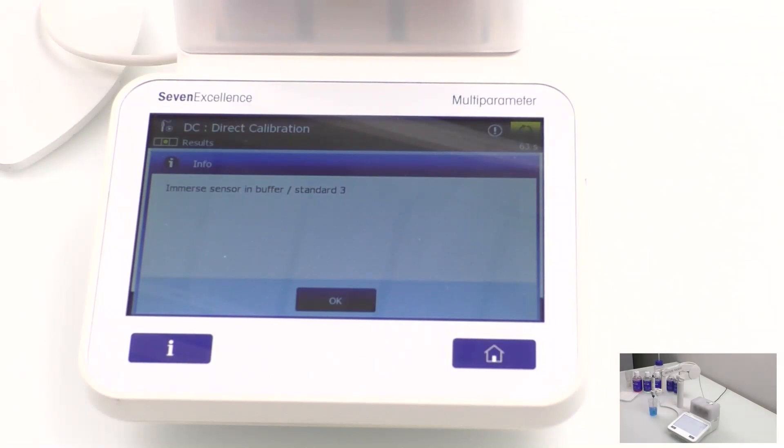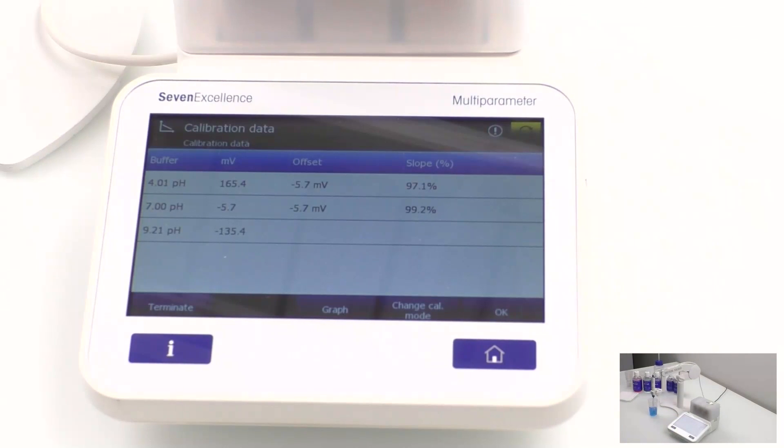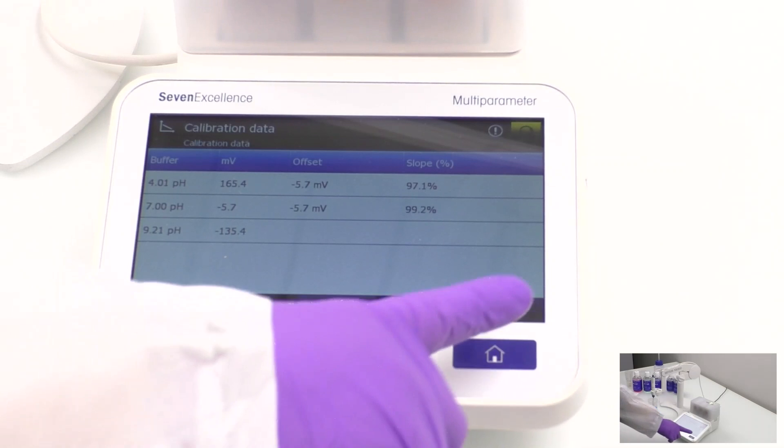Once you reach the endpoint of pH buffer 9.21, you will see a pop-up showing the results of the calibration as slope and offset. It will also indicate whether the calibration results fulfill the acceptance criteria. Confirm the message by clicking OK.